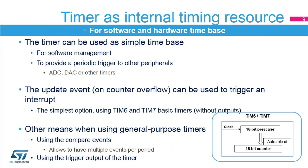The simplest use case for a timer is to provide an internal time base, commonly used by software routines either to provide periodic interrupts or single-shot timeout protection. The timer can also provide periodic triggers to other on-chip peripherals such as the ADC, DAC, and other timers. The update event from the timer, typically on counter overflow, is the usual means to have a software time base interrupt or to trigger a periodic event. The basic timers TIM6 and TIM7 are best suited for such tasks, as they are the simplest timer derivatives with no input-output channel.